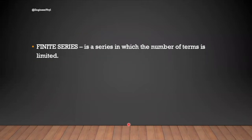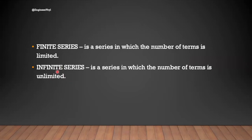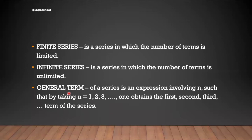Now, there are two types of series. The first is the finite series — a finite series is a series in which the number of terms is limited. And if the number of terms is unlimited, it is known as an infinite series. The general term of a series is an expression involving n such that by taking n equal to 1, 2, or 3, one obtains the first, second, third, and so on, term of the series.